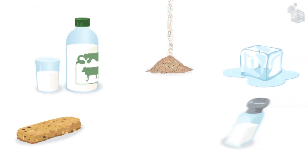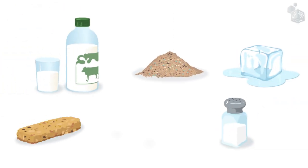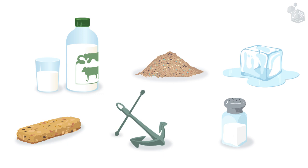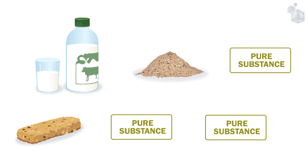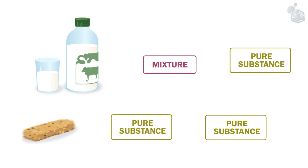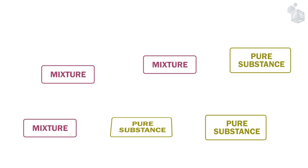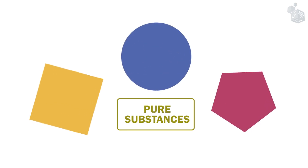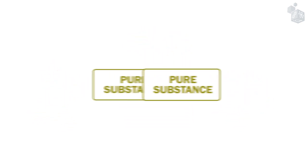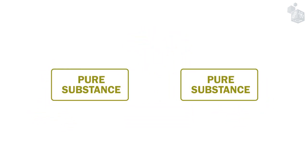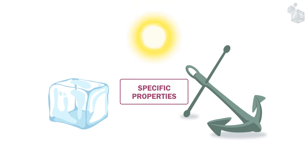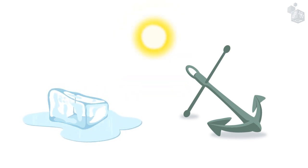We are surrounded by countless substances. Some are pure, but the large majority are formed by mixtures of two or more pure substances. Pure substances have a homogeneous appearance. Each pure substance is characterized by having specific properties that distinguish them from all other substances.